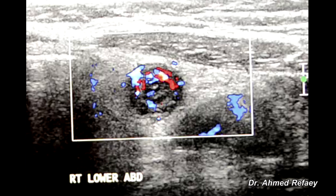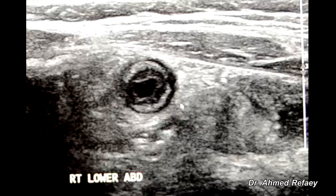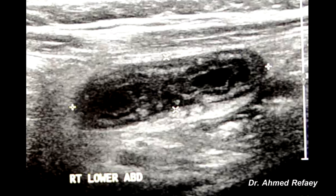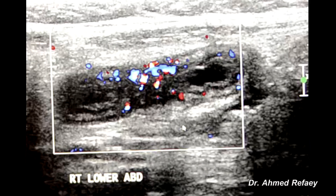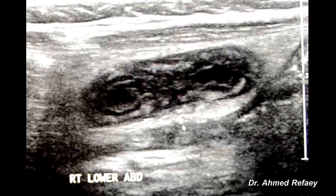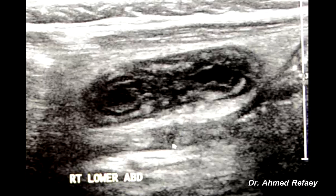Using color Doppler study, we can appreciate marked hypervascularity of the wall of the appendix. You also notice that the hypoechoic appendix is surrounded by hyperechoic fat — this is periappendiceal fat. On longitudinal scan, the appendix is markedly dilated, seen as a blind tubular structure with diameter more than 8 mm. There is no evidence of intraluminal appendicolith and no significant periappendiceal fluid collection in this case.